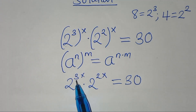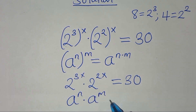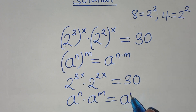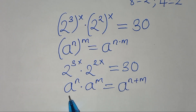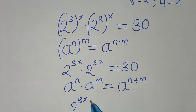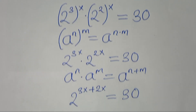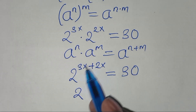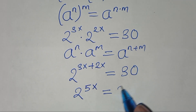From here, 2 to the power 3x times 2 to the power 2x is in the form of a to the power n times a to the power m, which equals a to the power (n plus m). Applying this indices identity, we have 2 to the power (3x plus 2x), which is 2 to the power 5x, equal to 30.